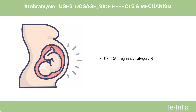Safety Advice — Pregnancy Category B: Reproduction studies in 3 types of animals at doses up to 33 times the normal human systemic dose have revealed no evidence of impaired fertility or harm to the fetus due to tobramycin. There are, however, no adequate and well-controlled studies in pregnant women.